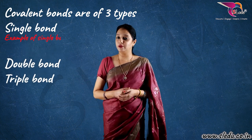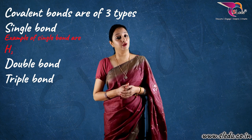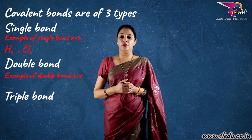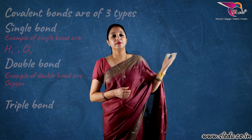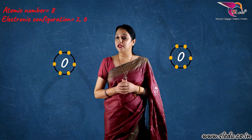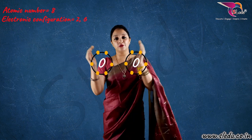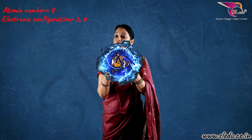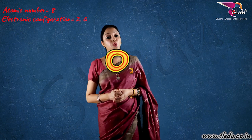Let me tell you the example of double bond — oxygen. On both sides I have two oxygen atoms, O and O. Now, oxygen's atomic number is 8, so what is its electronic configuration? 2, 6. So, for each oxygen we draw 6 dots. 6 means it needs 2 electrons to complete the last shell. So, both oxygen combine together by sharing two electrons, and ultimately I get the oxygen molecule, O2.